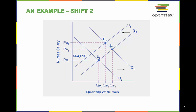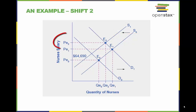The decrease in the supply of nurses due to nurses retiring from the workforce and fewer nursing graduates, holding all things equal — ceteris paribus — causes a leftward shift to the supply curve, resulting in even higher salaries for nurses at PE2.